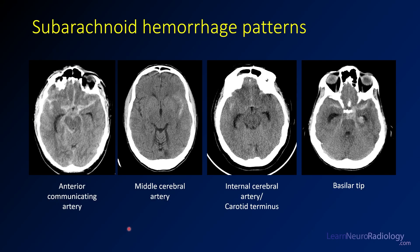This slide summarizes the hemorrhage patterns. Blood in the anterior interhemispheric fissure and sylvian fissures corresponds to an anterior communicating artery pattern. Blood out laterally in the sylvian fissure corresponds to an MCA aneurysm. Central blood with some sylvian involvement suggests a carotid terminus aneurysm. And blood predominantly in a posterior location corresponds to a basilar tip aneurysm. Burn these patterns into your head so you know where to look for each aneurysm type.